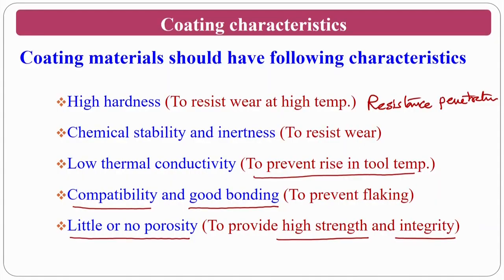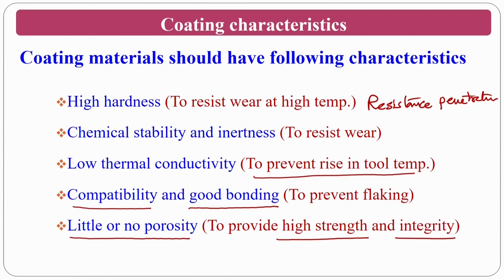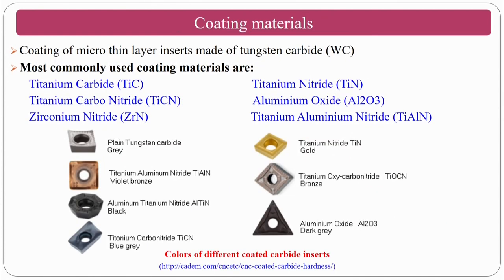If a coating material has all these characteristics, it is a good material to coat. The bare substrate material is normally tungsten carbide, the common tool material. On top of it, multi-layers are coated. The most commonly used coating materials are titanium carbide (TiC), titanium carbonitride (TiCN), zirconium nitride (ZrN), titanium nitride (TiN), aluminium oxide (Al₂O₃) — a ceramic material — and titanium aluminium nitride (TiAlN).